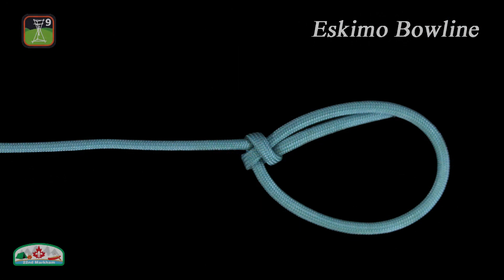In this episode, we will learn about the Eskimo bowline. It is another variation of the common bowline. Some people classify it as an anti-bowline because the bite is formed on the eye or loop instead of the standing part.